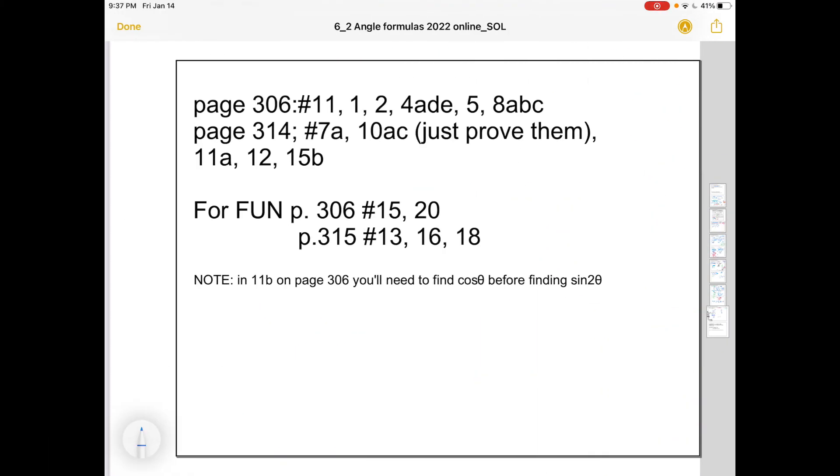That brings us to the practice stuff, so I'm saying page 306 number 11. And in number 11 you'll probably need to find cosine before you find sin 2θ, just like the example that was on this video. These ones over here are from yesterday. And then on page 314, there are some in 10. It asks you to like show that it works for 30 degrees or something. Just prove them. And then 11a, 12, and 15b. There are some for fun questions if you're interested. And good luck with the material folks. I hope this has been helpful, and take care.